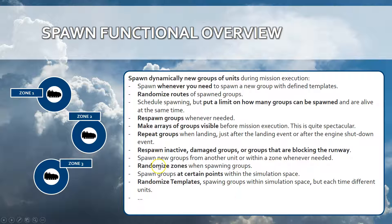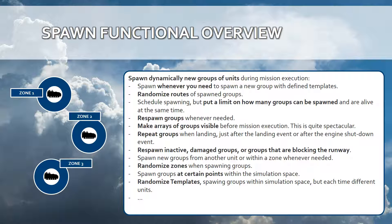You can randomize the zone where these units are being spawned, and you can spawn units or groups at a certain point within the simulation space. You can also randomize the template — you can define predefined templates of how a group would look and randomize those templates when a group is spawned. For example, you could have a SAM at the first spawn, a BMP at the second spawn, and a tank at the third spawn. This provides in a nutshell what SPAWN does.